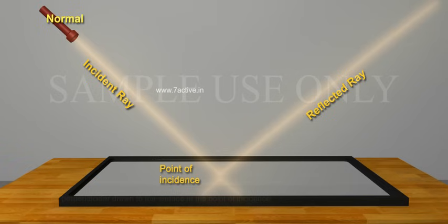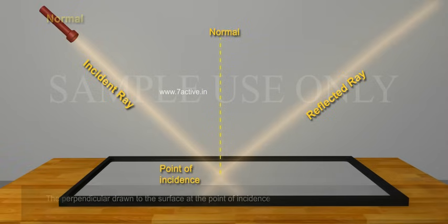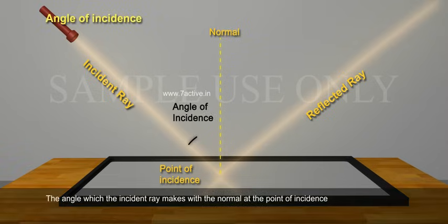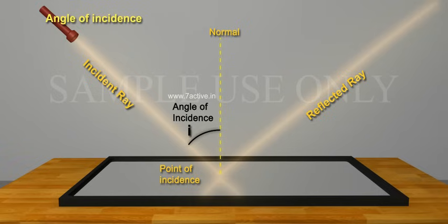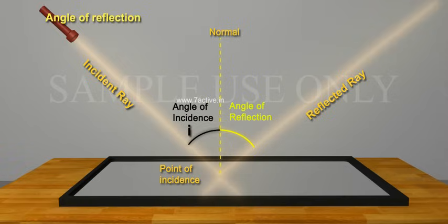Normal: The perpendicular drawn to the surface at the point of incidence. Angle of incidence: The angle which the incident ray makes with the normal at the point of incidence. It is denoted by the letter I. Angle of reflection: The angle which the reflected ray makes with the normal at the point of incidence. It is denoted by the letter R.